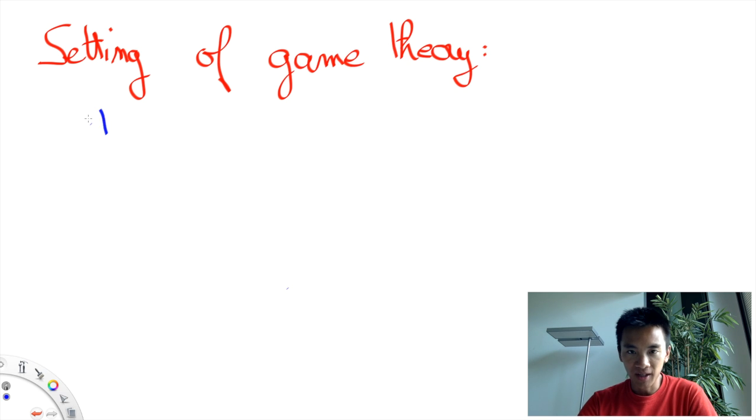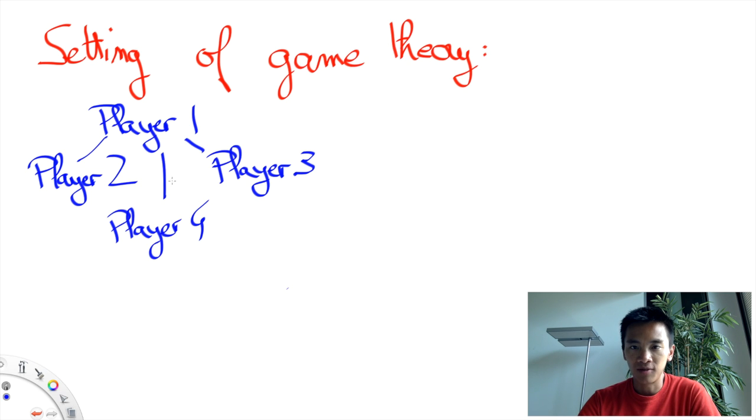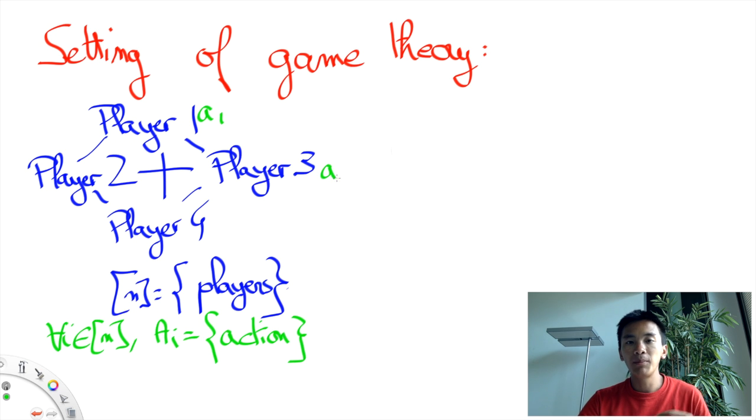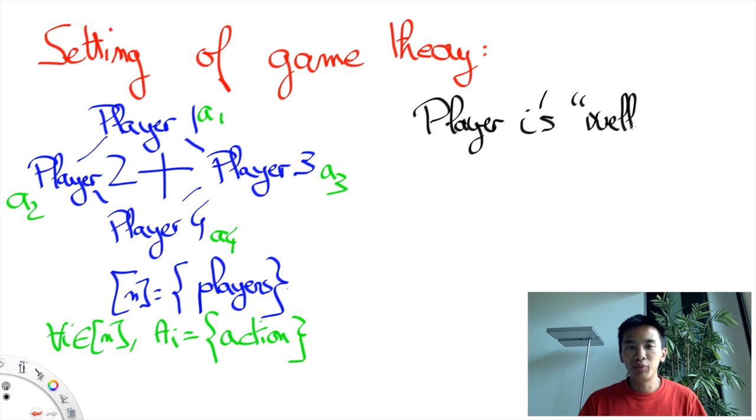The general formulation of game theory by Nash consists of a finite set of players. Each player has a set of actions. Crucially, any player's actions affect other players' gains and losses.